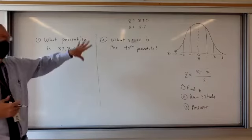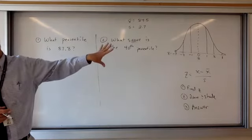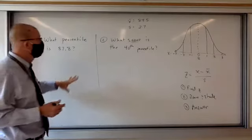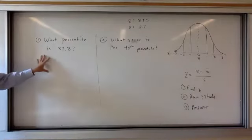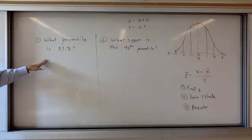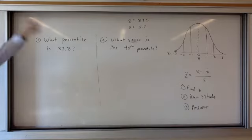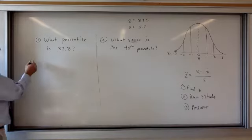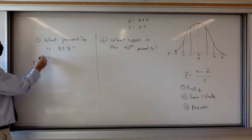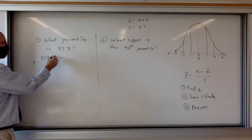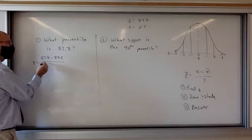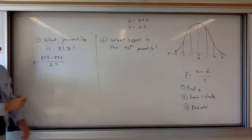Okay. So, what percentile is 87.8? Let's start here. Step one is? Z. So, here we go. Z equals 87.8 minus 84.5 divided by 2.7.